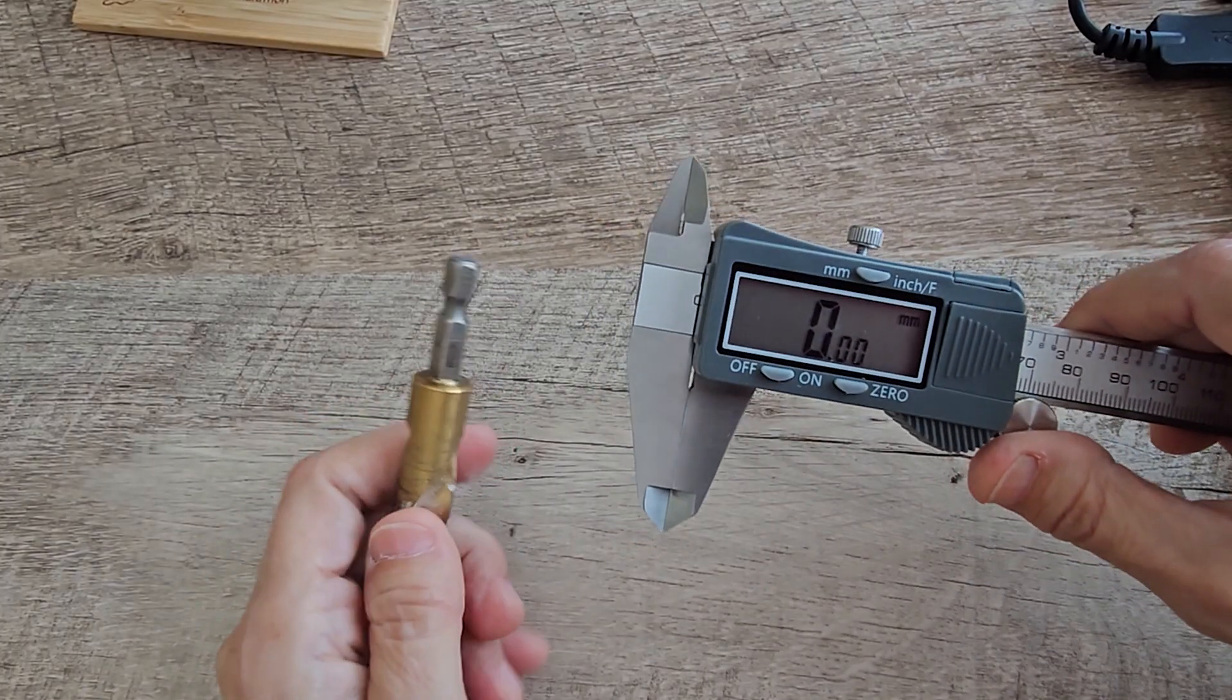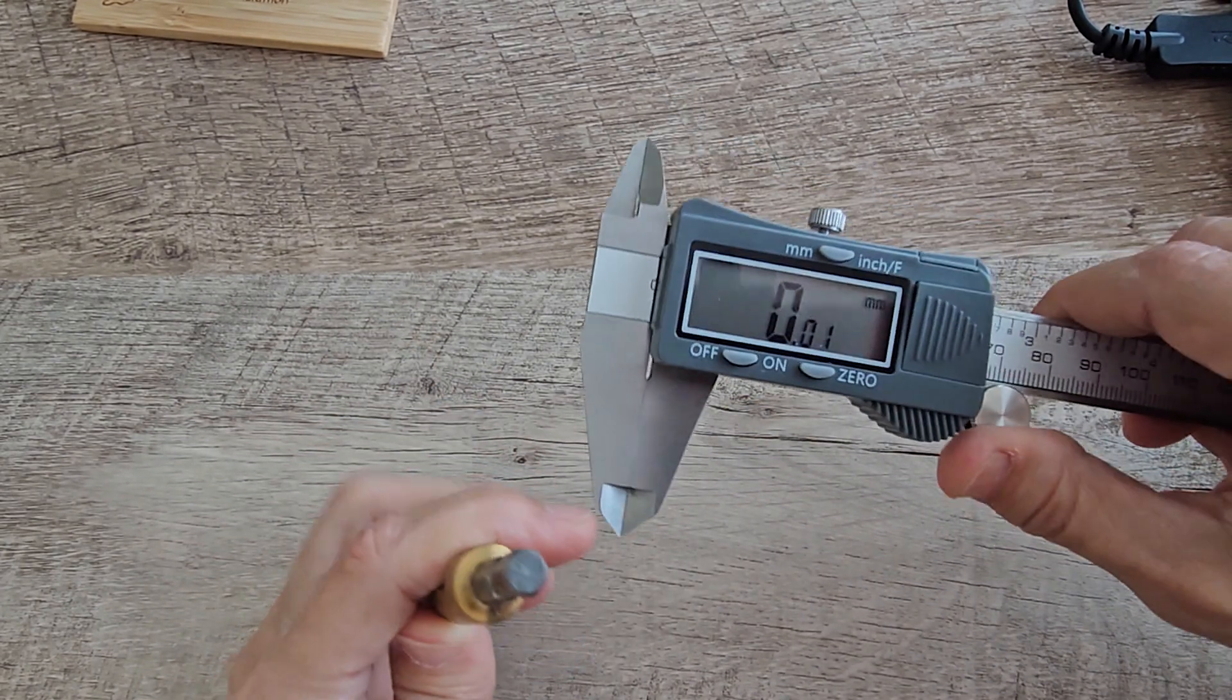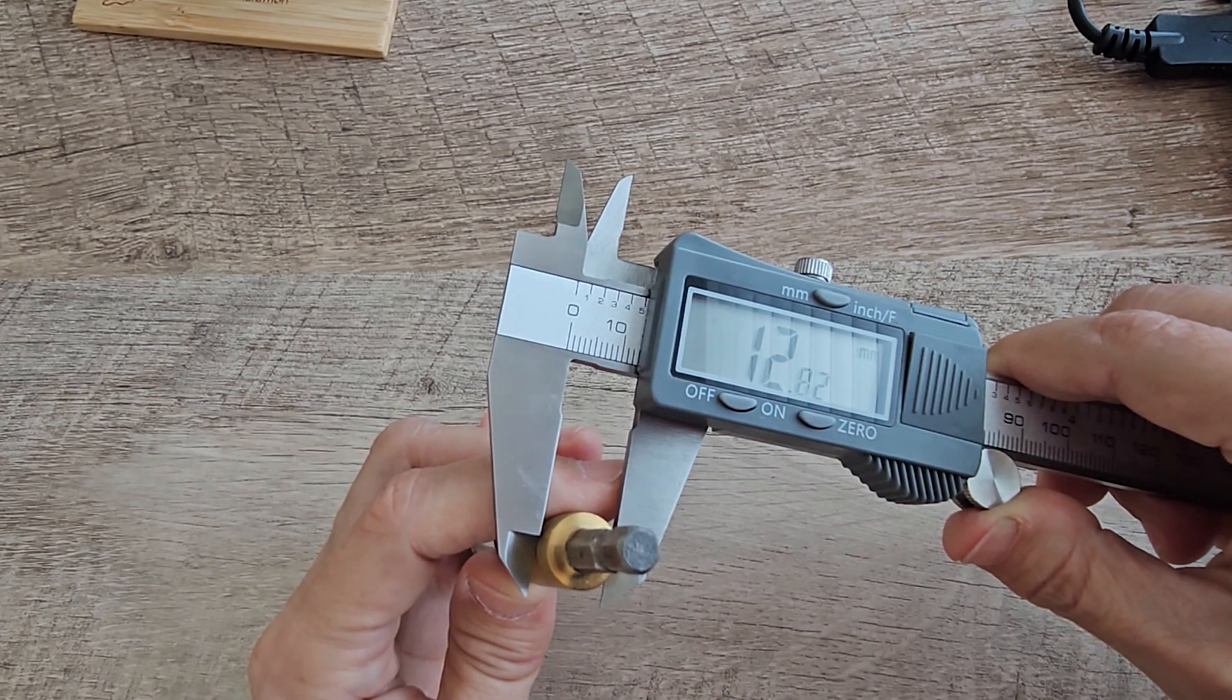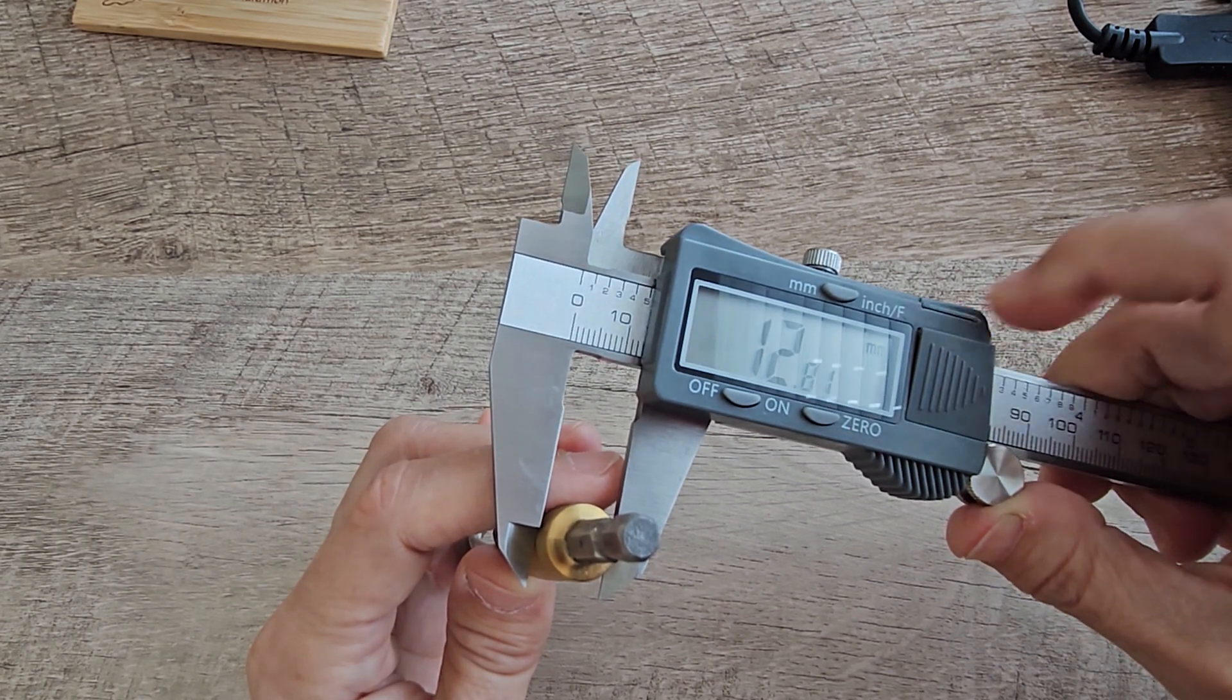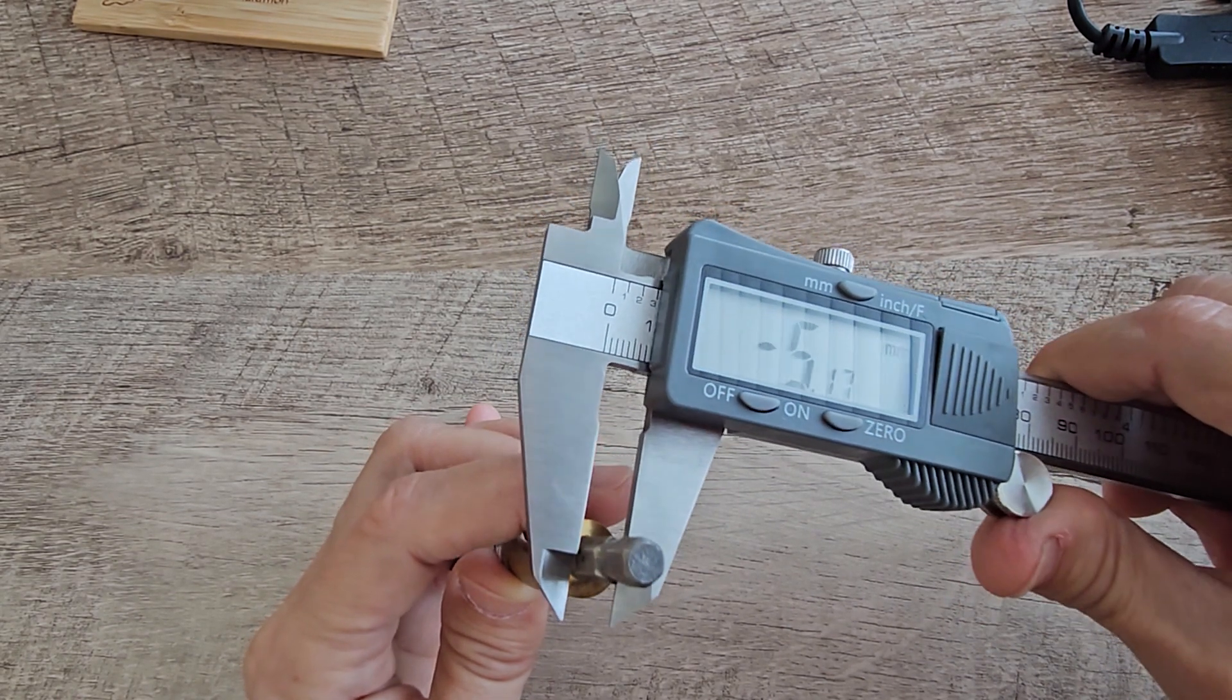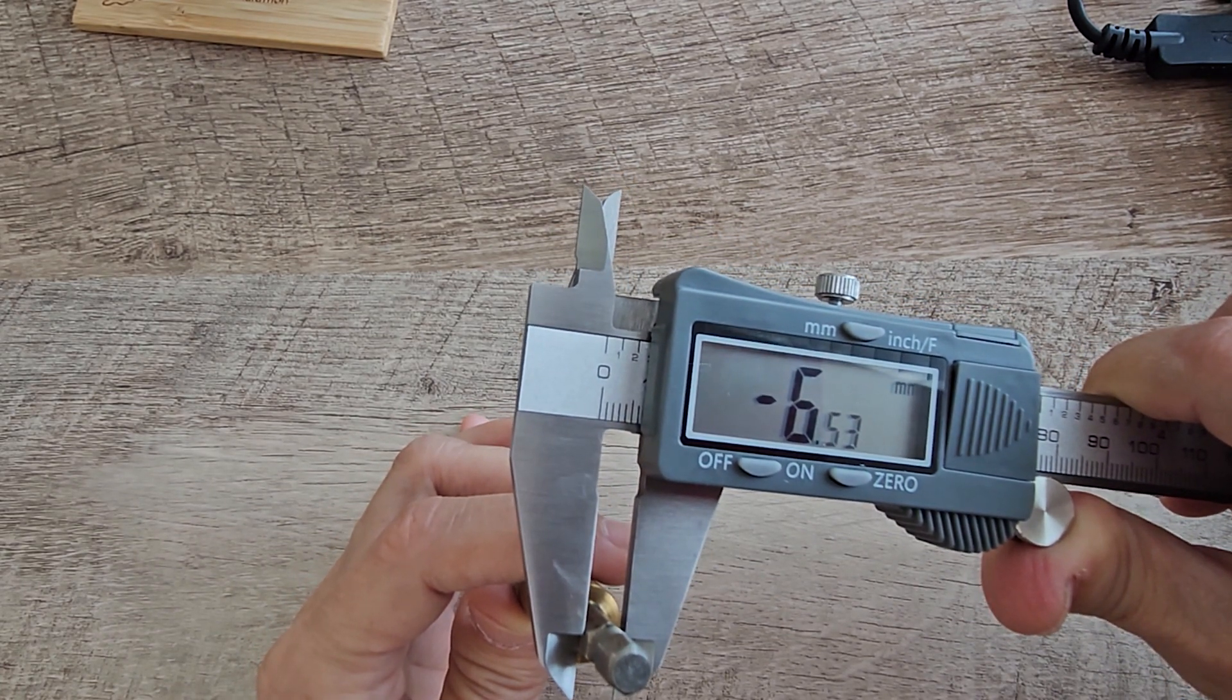There is a possible case where you may want to zero it out or calibrate it without the jaws being shut. For example, if I get the outside measurement of this item, and now I want to know what the difference is between the main drill bit and the stem of it. So I would zero it out here and then I could... So that would show me the difference in diameter.